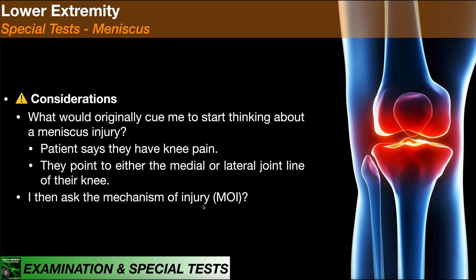Also understand that if there is a closed chain rotational mechanism, there could also be a tear to the ACL, so you should also perform the ACL special tests, which are covered in a separate video. One final point: other than McMurray's test, which has separate versions for medial and lateral meniscus, none of the other special tests differentiate between the two. To figure out which meniscus is affected, just think about which side of the knee is painful. Medial pain means 99% of the time it's a medial meniscus tear; lateral pain means 99% of the time it's a lateral meniscus tear.